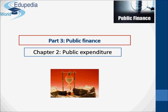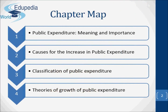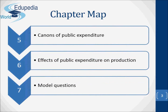Hello everyone and thanks for watching Edupedia World videos. This chapter will be entitled Public Expenditure. Along this chapter we are going to talk about the meaning and importance of public expenditure, their causes for the increase, the classification of public expenditure, theories of growth of public expenditure. After that we are going to talk about the canons or principles of public expenditure, the effects of public expenditure on production particularly, and by the end we are going to present some model questions. So let's get started.